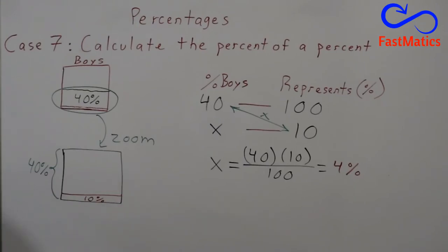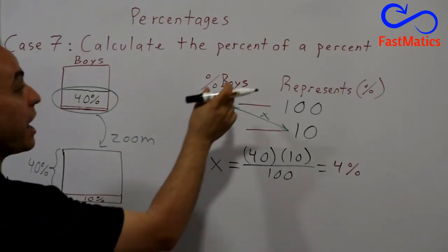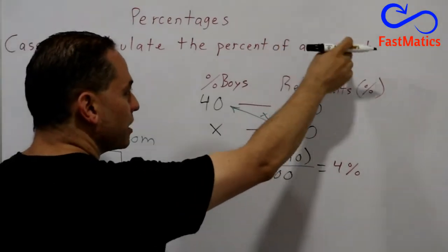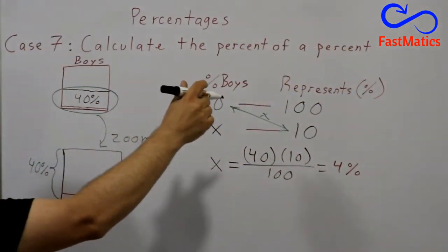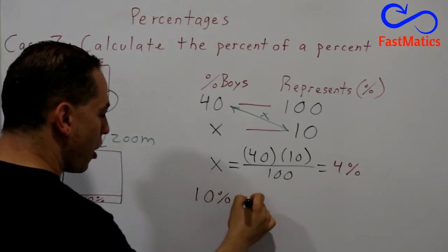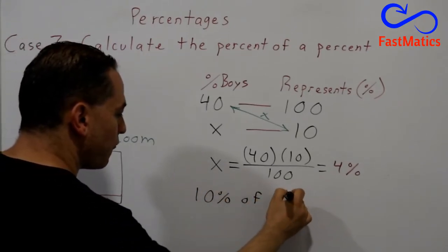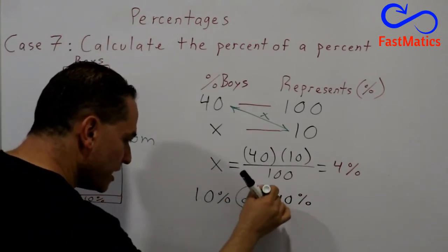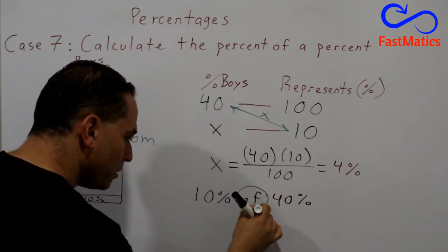But wait, we have another method, a very fast method. When in math you see that someone tells something of something, that means multiplication. 10% of 40% means 'of' is multiplication. We are going to multiply 10% by 40%.